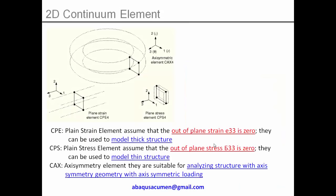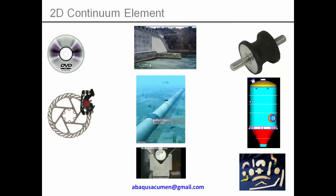To summarize: in 2D continuum elements you have three types — plane strain, plane stress, and axisymmetry. For plane strain, the third direction strain is zero and it is used for thick structures. For plane stress, it is used for thin structures. For axisymmetry, when there is 360-degree rotation with axisymmetric loading, you use the axisymmetry element. This was a short video on 2D continuum elements to help you convert many 3D problems into 2D. If you have any questions, send an email to abacusacumen@gmail.com. Please like and subscribe to Abacus Acumen. Thanks, bye.